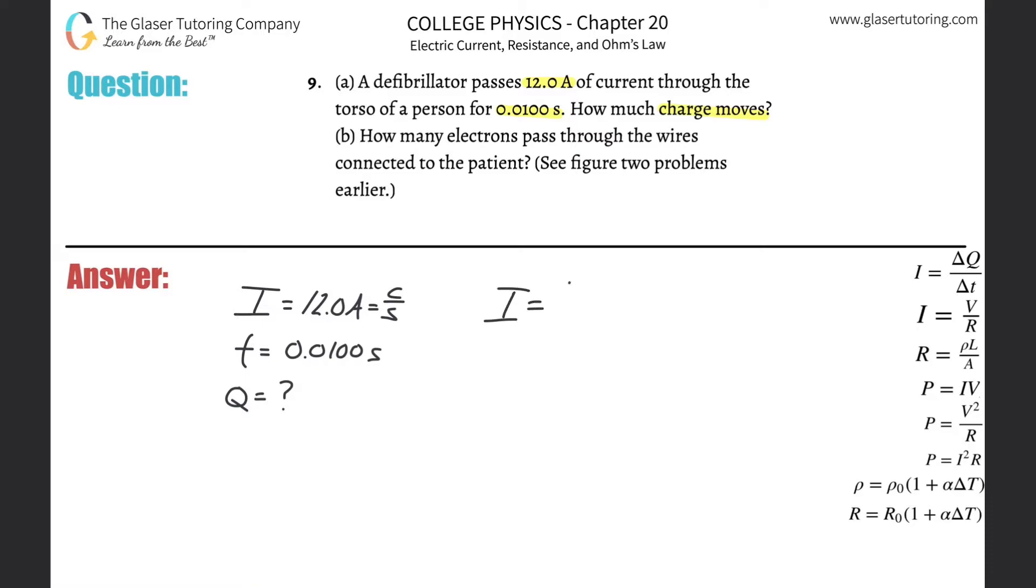Current is equal to the change in charge divided by the change in time. So if I have to find the charge, just simply do a little cross-multiplication here. So the change in charge is going to be equal to the current multiplied by the change in time.